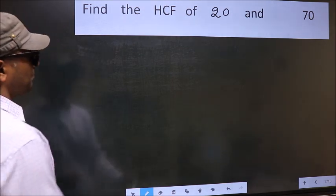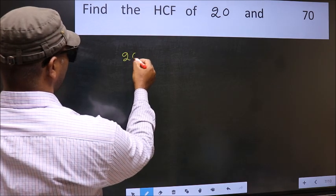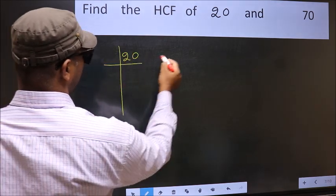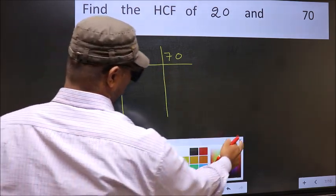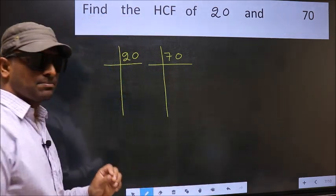What I mean is 20 and 70. This is your step 1.